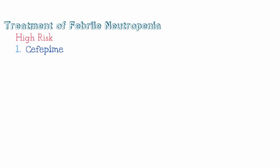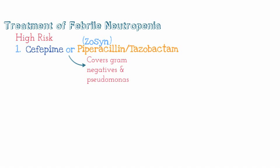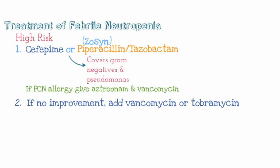For high-risk patients, the same principles apply: cover gram-negatives and pseudomonas first. Initial antibiotics should be either cefepime or piperacillin-tazobactam. Cefepime has gram-negative and some gram-positive coverage and covers pseudomonas. Piperacillin-tazobactam, also known as Zosyn, also has gram-negative coverage and anti-pseudomonal activity. For patients with a penicillin allergy, you can start with aztreonam for gram-negative coverage and add vancomycin for broad-spectrum coverage, then monitor for improvement.